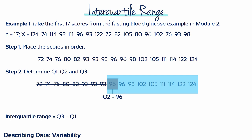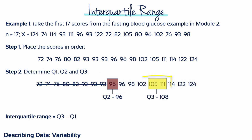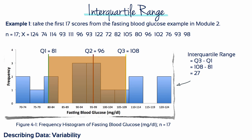Next, to identify Q3, we focus on the scores that begin with Q2 and finish with the last score. Q3 is the median of this subset. Again, there are an even number of scores, so Q3 is the mean of the middle 2: 105 plus 111 divided by 2 equals 108. So our quartile values are Q1=81, Q2=96, and Q3=108. The interquartile range equals Q3 minus Q1, so 108 minus 81 equals 27.